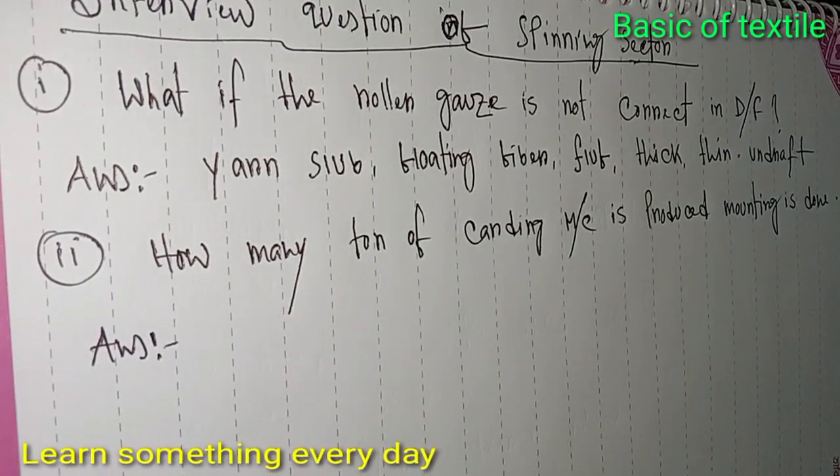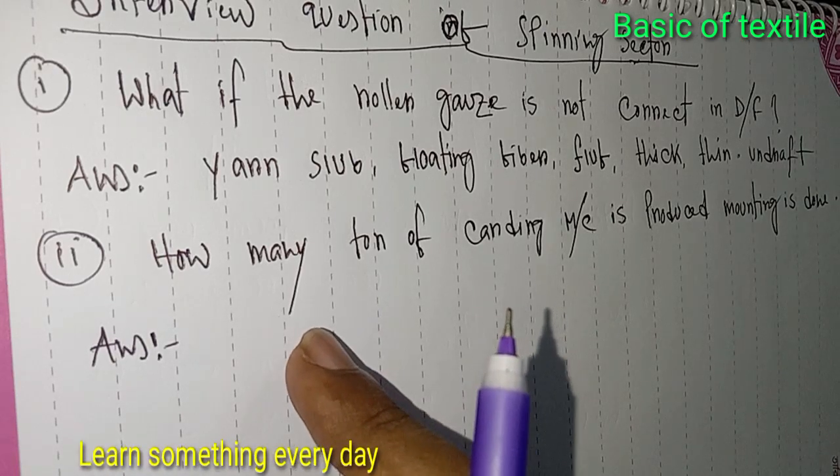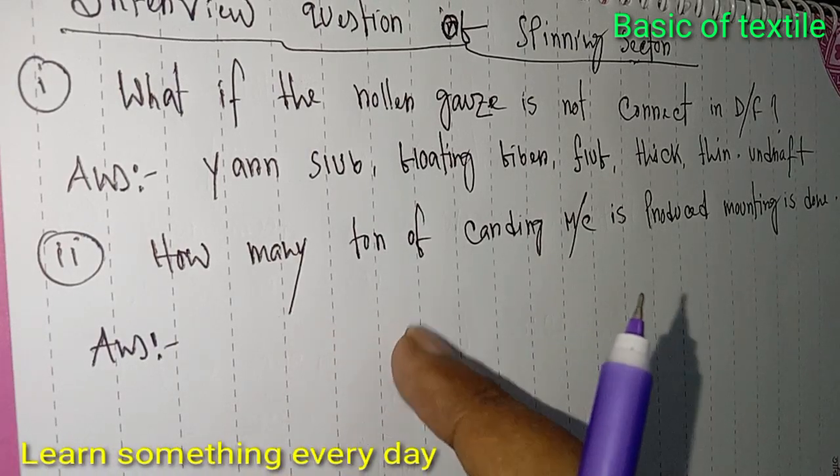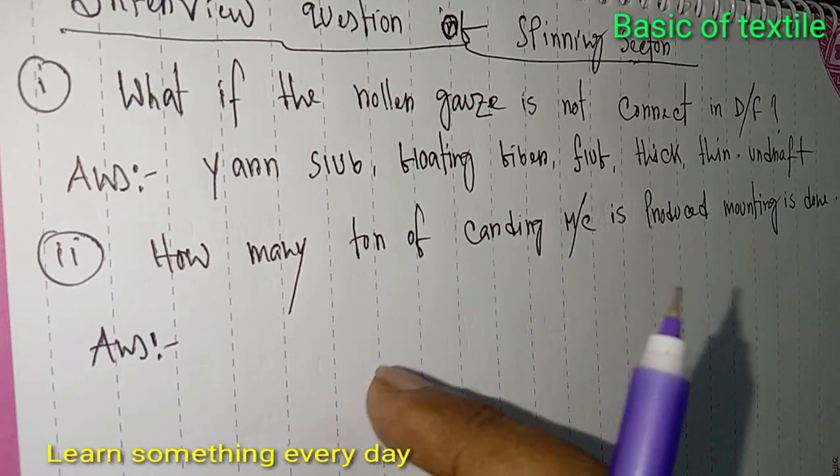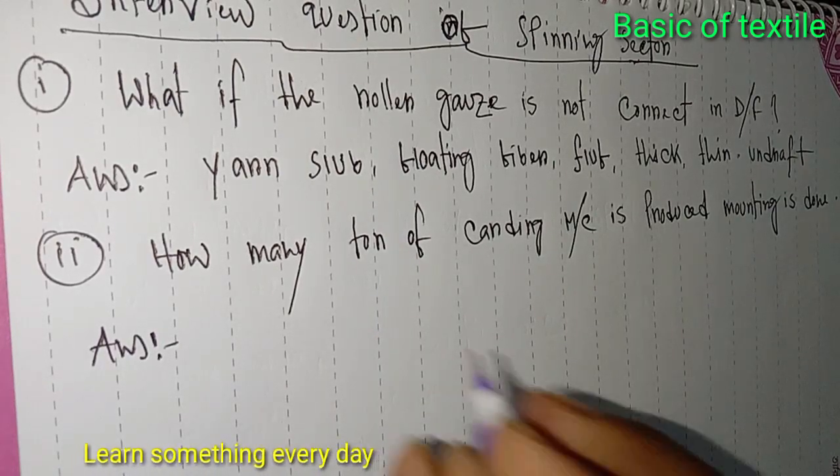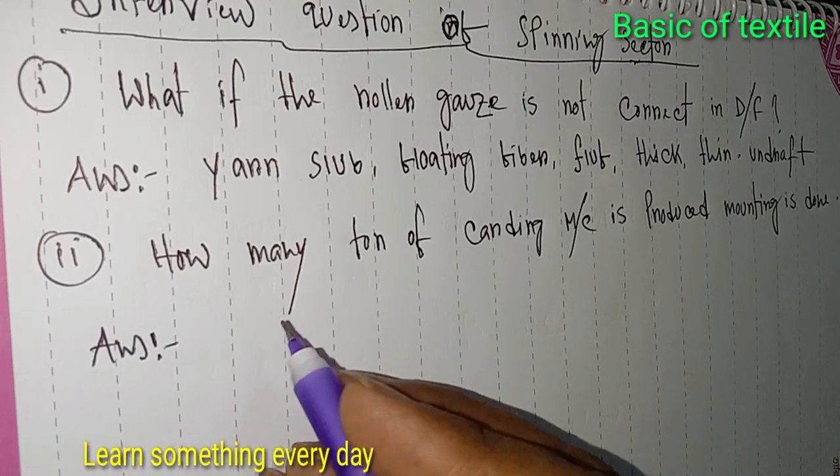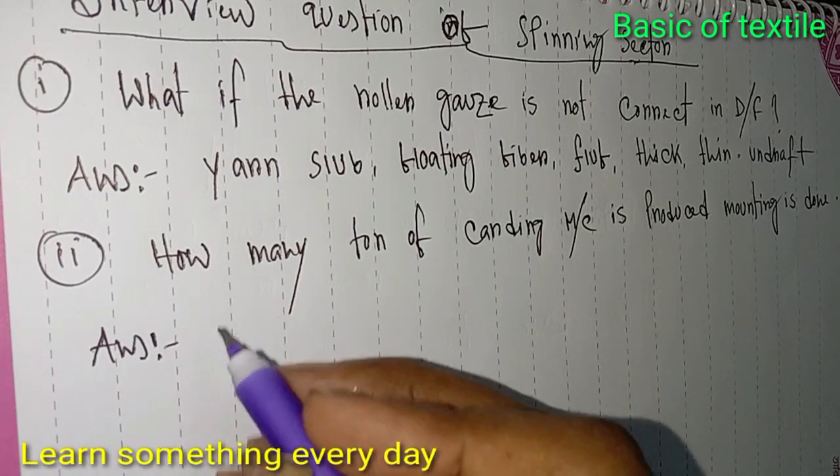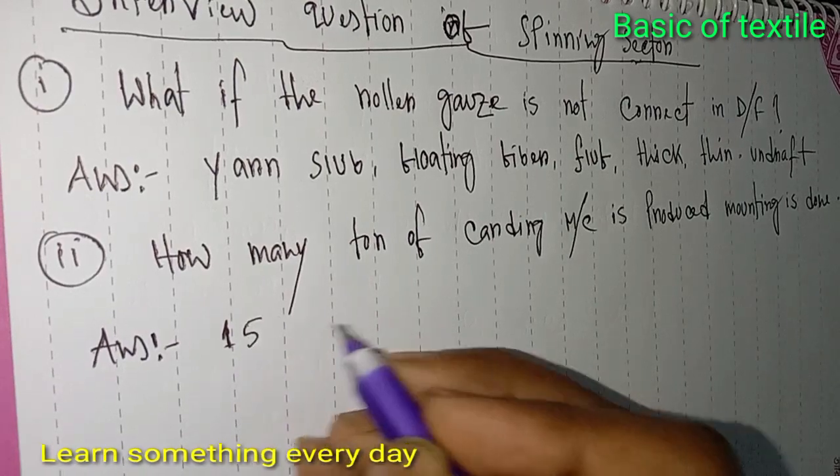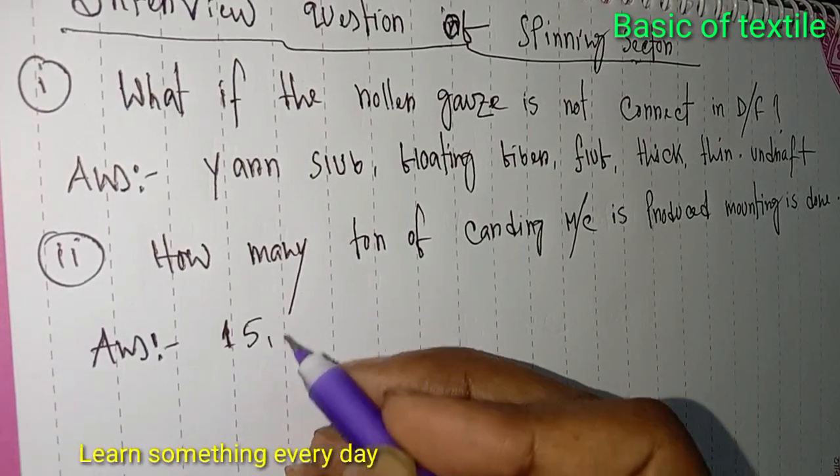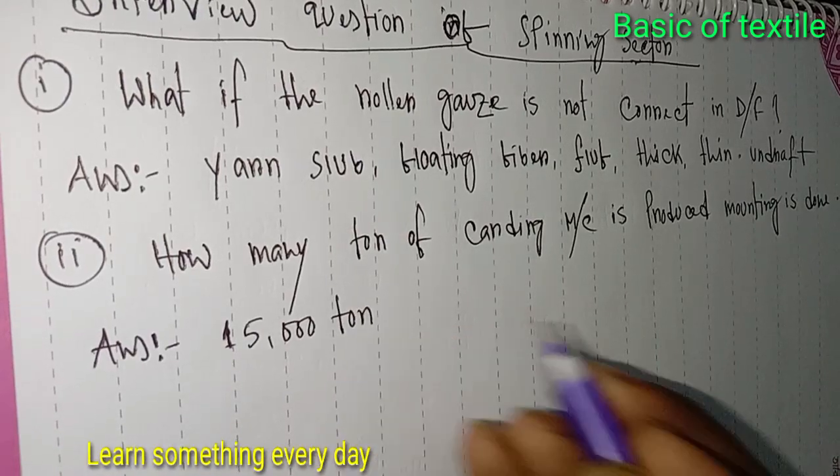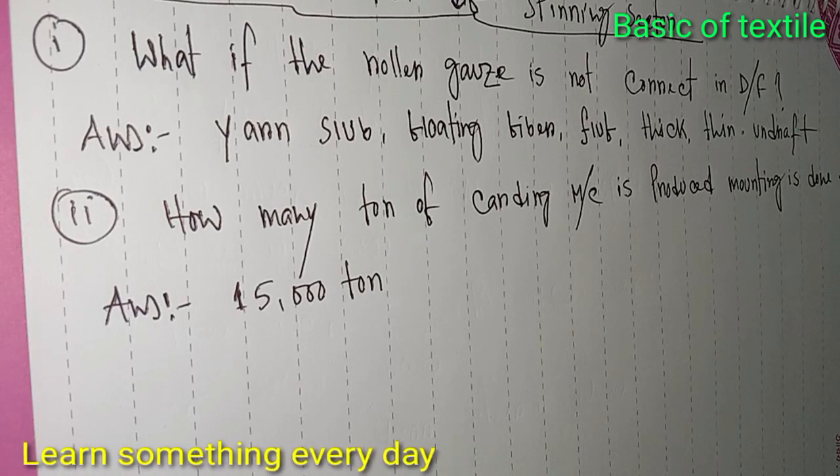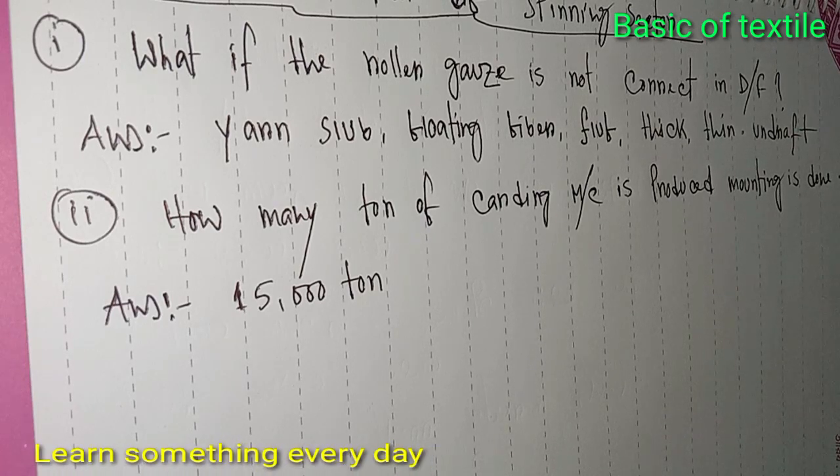Answer: Fifteen thousand tons. When production reaches fifteen thousand tons, then mounting is done on the carding machine.